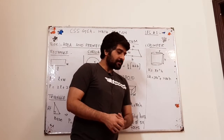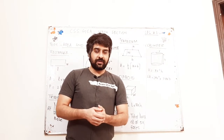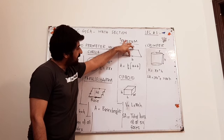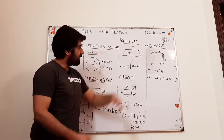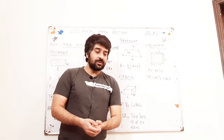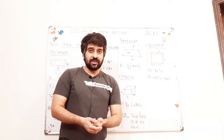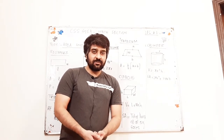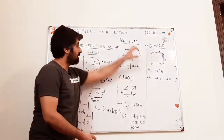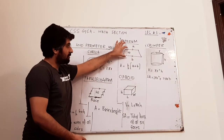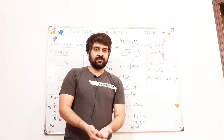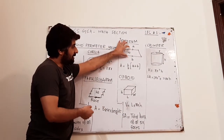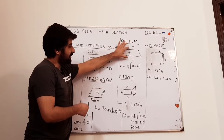The next shape is trapezium, a shape where two sides are parallel while the other two are not. Here a and b are the parallel sides. The area of a trapezium is (h/2)(a + b), where a + b means the sum of the two parallel sides and h is the height — the perpendicular distance between the parallel sides.